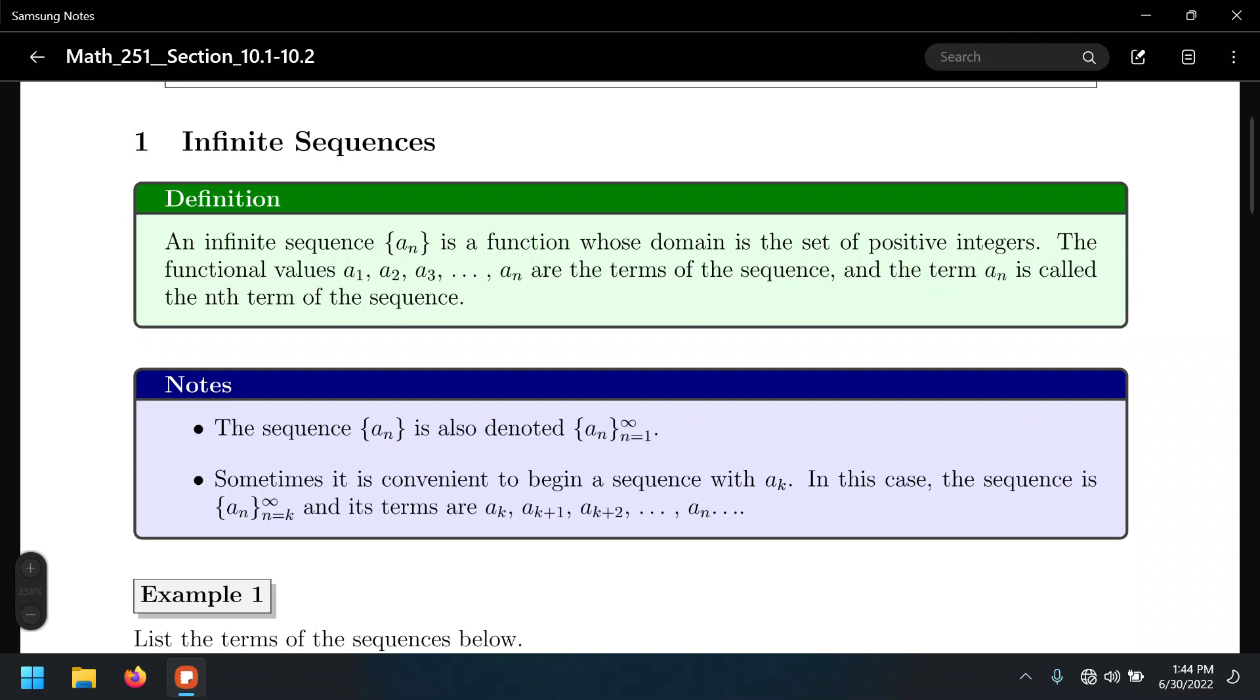The reason why the set of all natural numbers is only the domain of these functions is because we will be talking about terms of a sequence like the first term of a sequence, the second term of the sequence, the third term of the sequence, etc., all the way to the infinitely many terms of a sequence. These are discrete values.